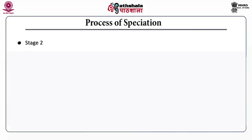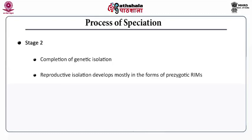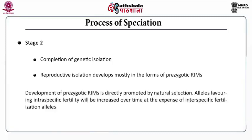Stage 2 is the completion of genetic isolation. Reproductive isolation develops mostly in the forms of pre-zygotic reproductive isolating mechanisms. Development of pre-zygotic reproductive isolating mechanisms is directly promoted by natural selection. Alleles favoring intraspecific fertility will be increased over time at the expense of intraspecific fertilization alleles.